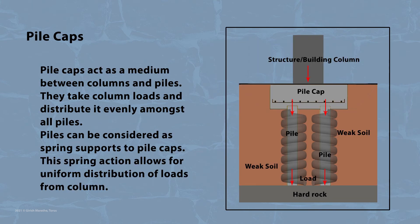Pile caps act as a medium between columns and piles. Pile caps take load from columns and distribute them evenly between all piles supporting the pile cap. Piles can be considered as spring supports to the pile cap, and this spring action allows for uniform load distribution from the column.